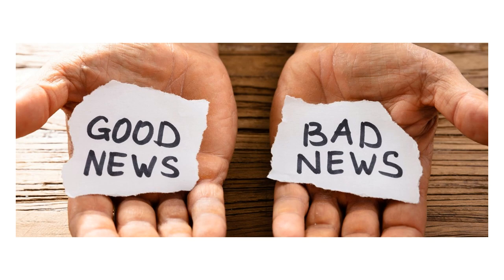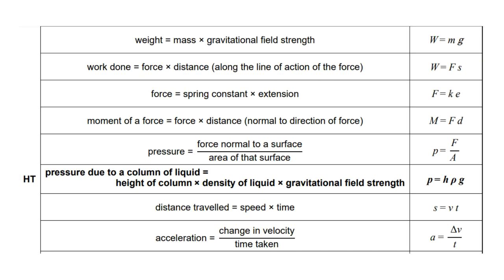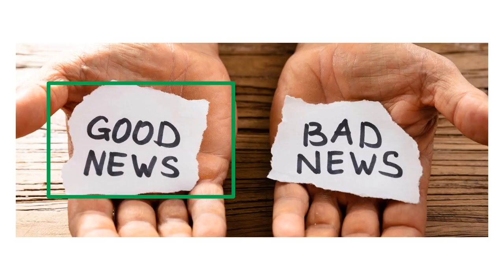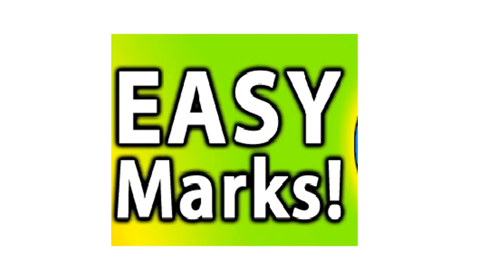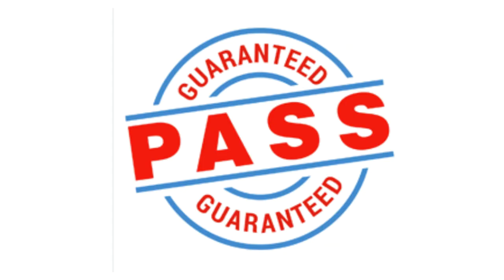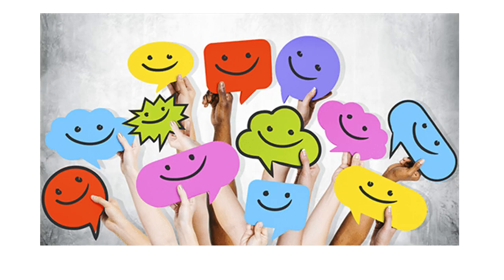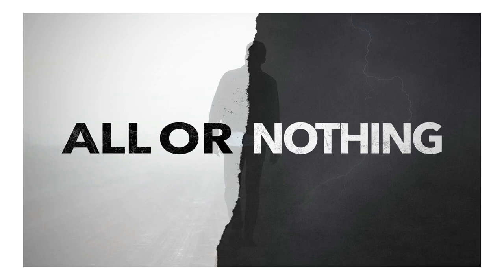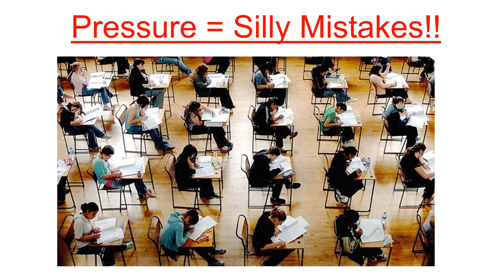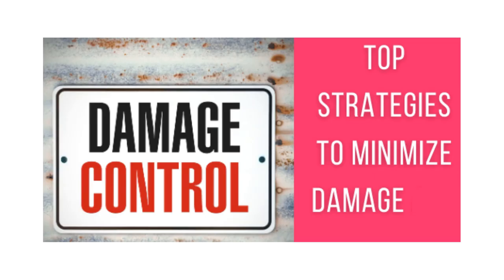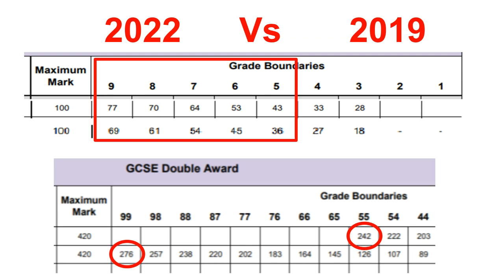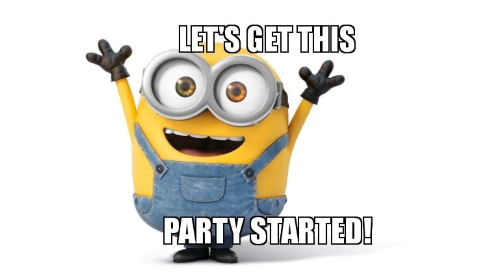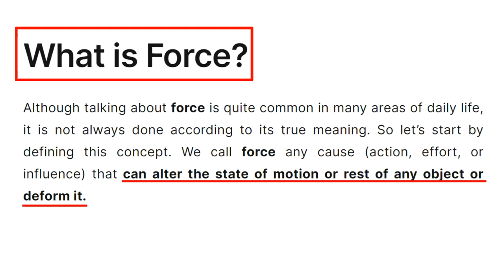Some good news and bad news: if you're doing higher level, there are a lot of equations to memorize. But once you can memorize and rearrange an equation, you're pretty much guaranteed to pass. You must show your workings out for all questions — if you make a mistake, you'll still get some marks, which could be the difference of a whole grade.